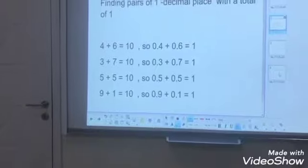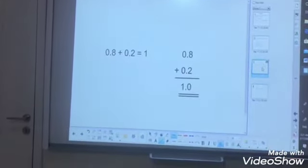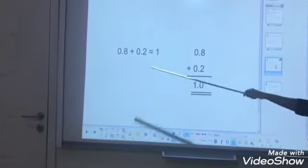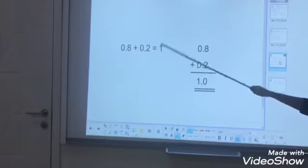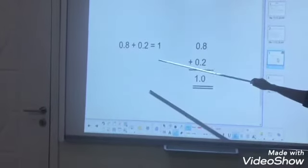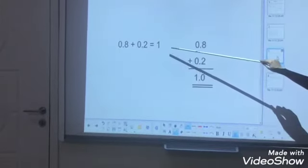Then, next, another example you can see. 8 plus 2, you know, is 10. So from that 8 plus 2, I am taking it as a decimal: 0.8 plus 0.2 equals 1.